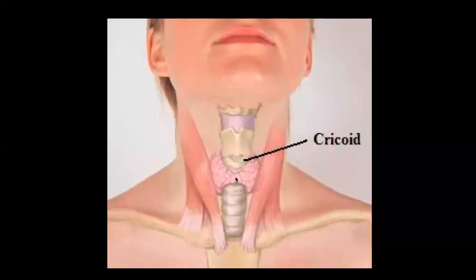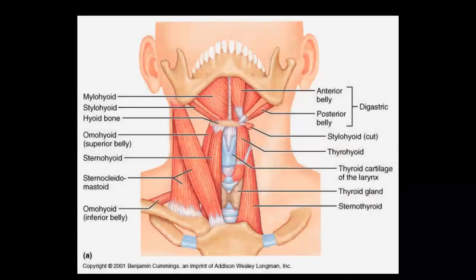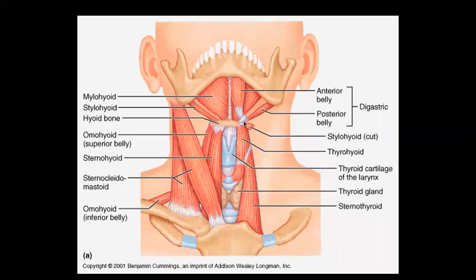The midline structures of the neck run from the mental protuberance to the jugular notch: mental protuberance, median fibrous raphe, body of the hyoid bone — which is the only bone; the rest are cartilages — thyrohyoid membrane, thyroid cartilage, cricothyroid membrane, cricoid cartilage, tracheal rings, and the isthmus of the thyroid gland.